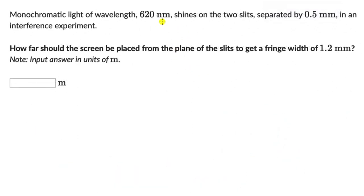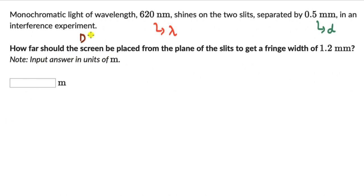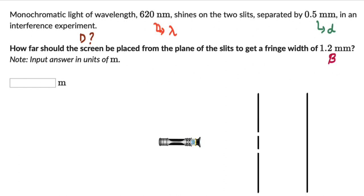Let's move on to the second question. We have a monochromatic light of wavelength 620 nanometers shining on two slits separated by 0.5 millimeters in an interference experiment. The question asks how far the screen should be placed from the plane of the slits to get a fringe width of 1.2 millimeters. Pause the video and give this a try. The wavelength is 620 nm, small d is 0.5 mm, and we need to find capital D.